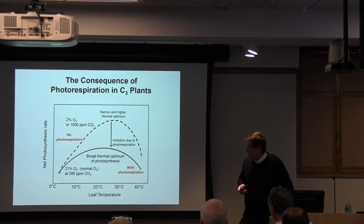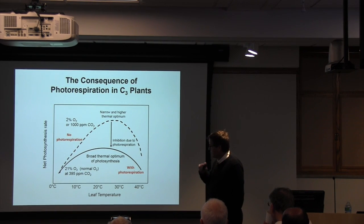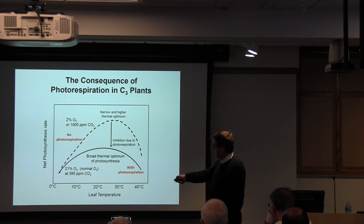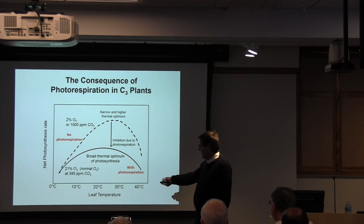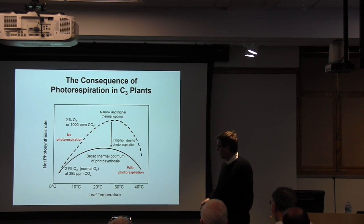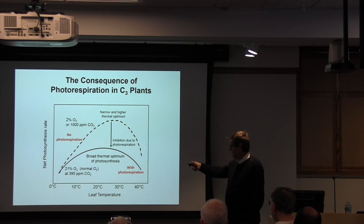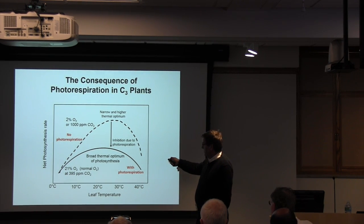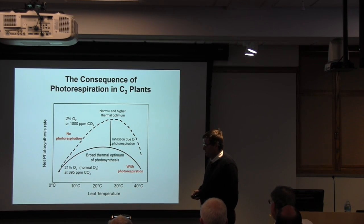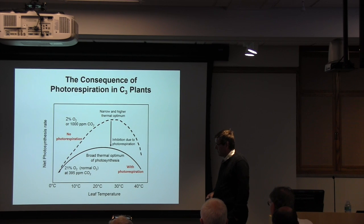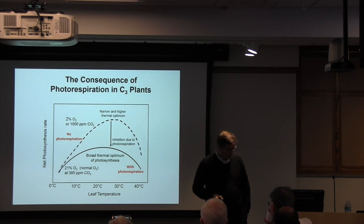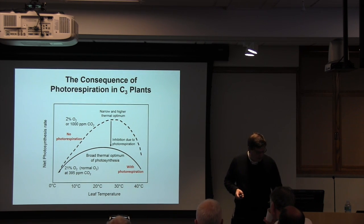This shows the result of photorespiration on net photosynthesis as a function of temperature. At current atmospheric levels and 21% oxygen, a typical C3 photosynthetic response shows a big drop-off at higher temperatures. But if you reduce photorespiration by going to 2% oxygen or high CO2, you can see the impact of photorespiration by comparing the differences in rates. At high temperatures, the difference between a photorespiration-free and a photorespiration-inhibited C3 plant is quite large, not such a problem at low temperatures. Because of this strong inhibition, it's been understood for years that carbon concentrating mechanisms have evolved to deal with the problem.